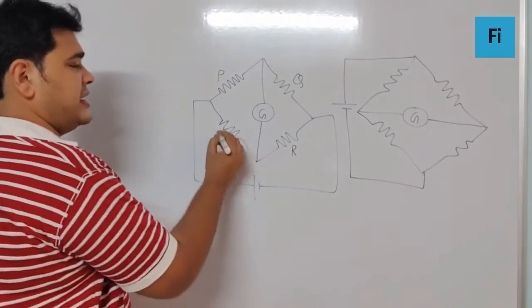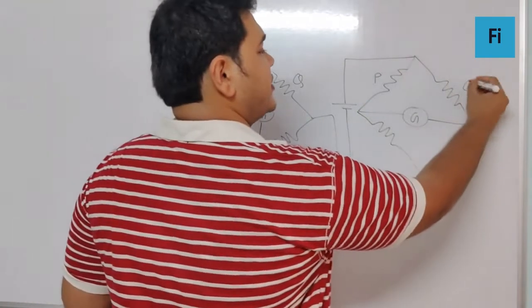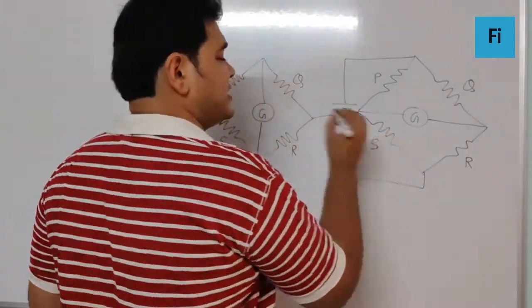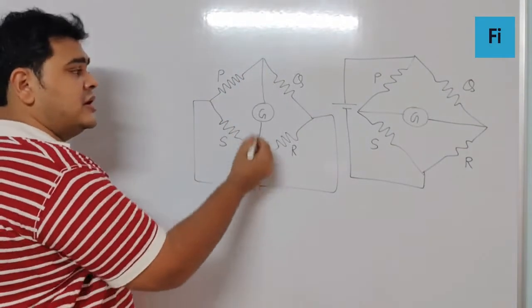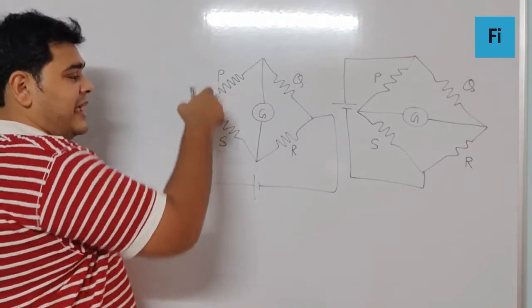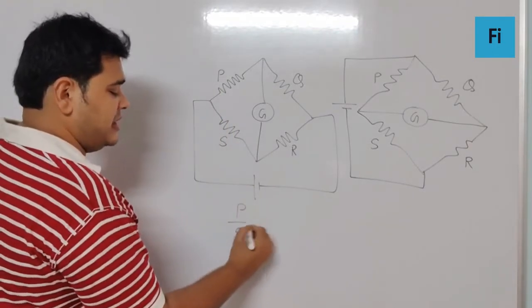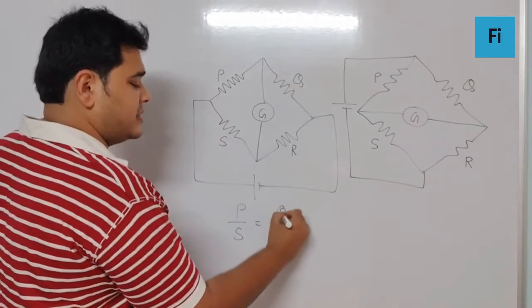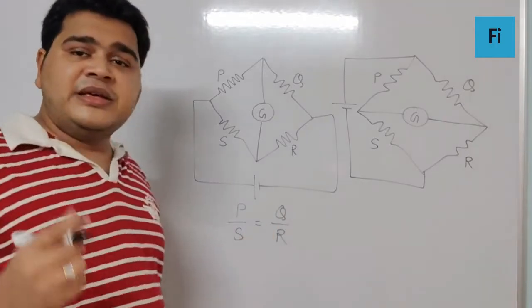The same resistances over here: P, Q, R, S. I can say here, if this is a balanced condition, I can say that P by S is actually equal to Q by R.